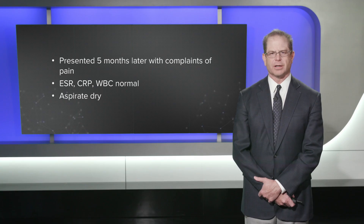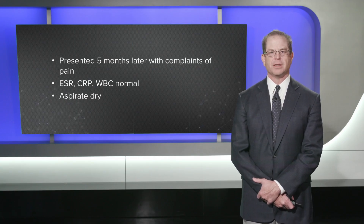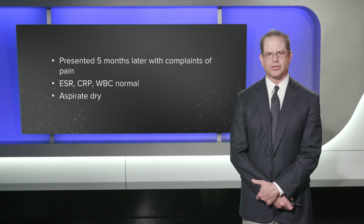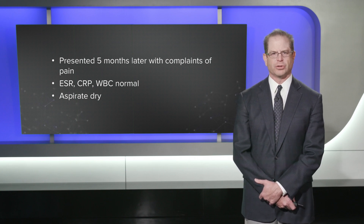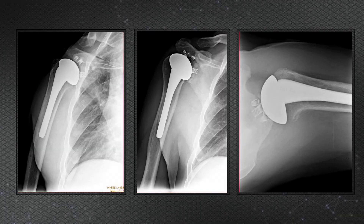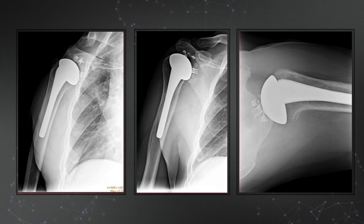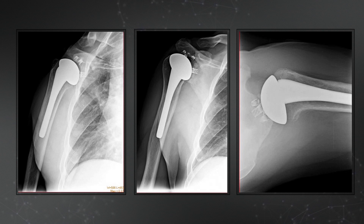He presented to our clinic five months subsequent to that surgery with complaints of pain. Blood work was normal and an aspiration of his shoulder was dry. X-rays demonstrate an anatomic total shoulder replacement in place with no obvious radiolucent lines. The humeral component is in appropriate position; however, the glenoid component appears fractured with the face of the glenoid tipped superiorly.